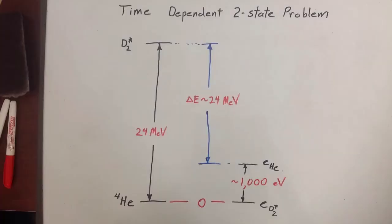What we have outlined here is just a classic time-dependent two-state problem found in most quantum texts. On the left is shown the 24 MeV between what we call the deuteron ground state, or unexcited state of helium-4, and the excited deuteron intermediate state.